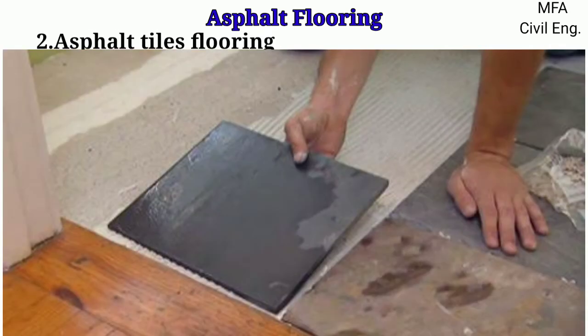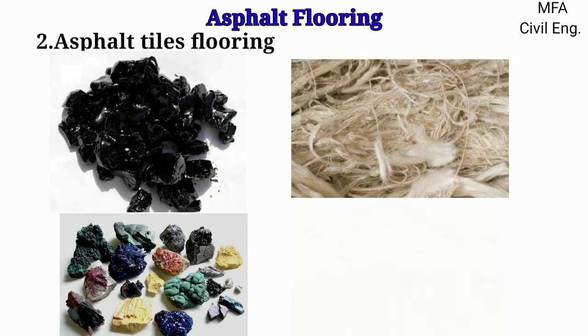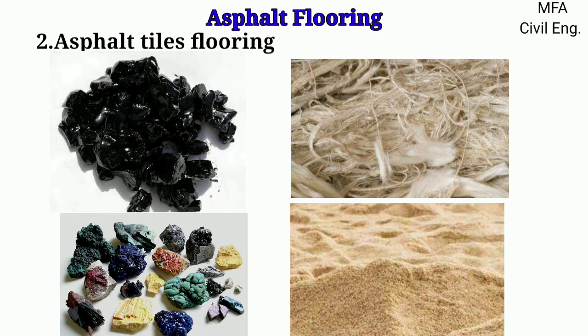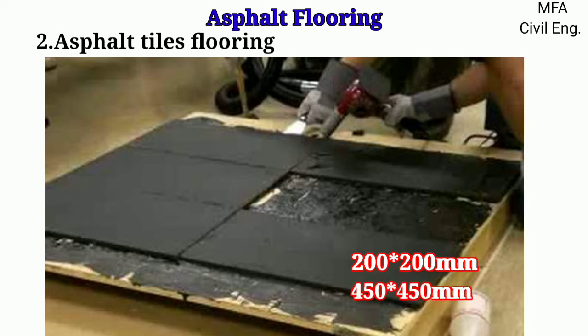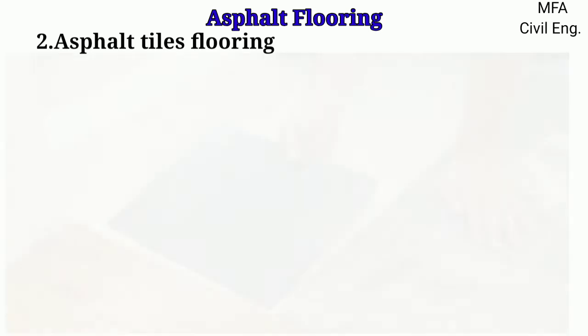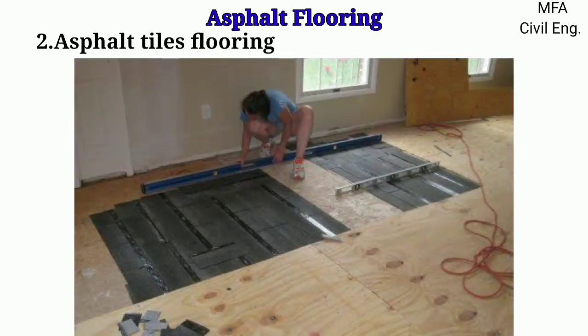Asphalt tile flooring is made of asphalt tiles which are prepared from a mixture of asphalt, mineral pigments, asbestos fiber, and inert material. This mixture is then placed in square sizes varying from 200×200 mm to 450×450 mm with a thickness varying from 3 mm to 6 mm. Asphalt tiles can be directly placed on the concrete base with the help of cement, or can be fixed to the wooden floor with the help of a layer of asphalt, saturated felt, or any other solution.